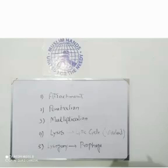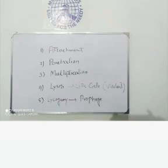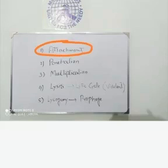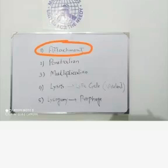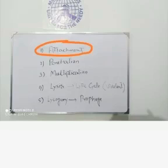اب آتے ہیں ان 5 steps کی طرف جو bacteria کے life cycle میں involve ہوتے ہیں۔ سب سے پہلا step ہے attachment۔ Attachment میں کیا ہوتا ہے کہ virus نے اپنے host کی body کے اوپر کسی جگہ پہ جوڑنا ہے — اس جگہ کو receptor site کہتے ہیں۔ Virus اپنے آپ کو host کی receptor site کے اوپر جا کے attach کرتا ہے۔